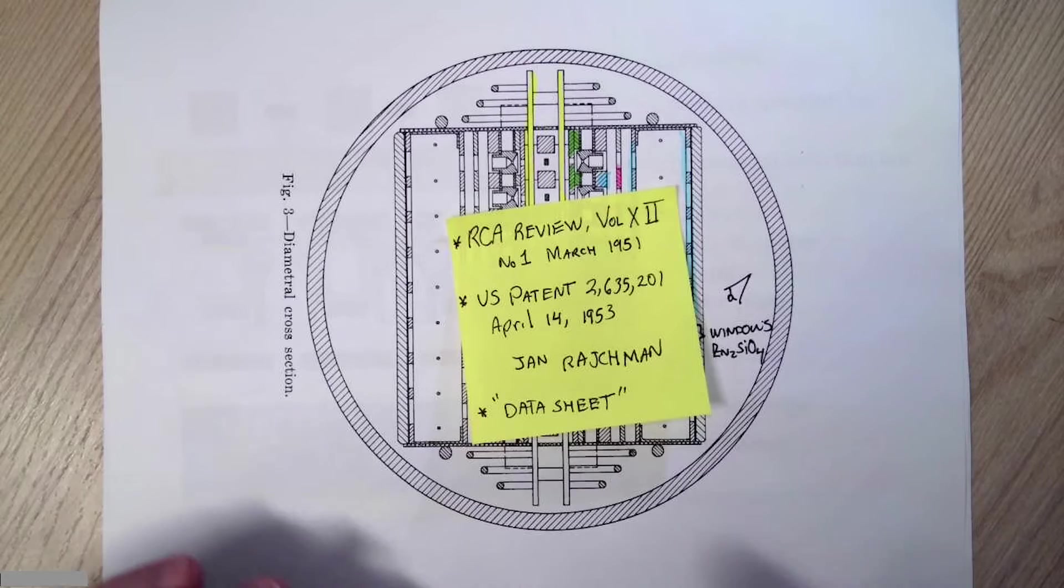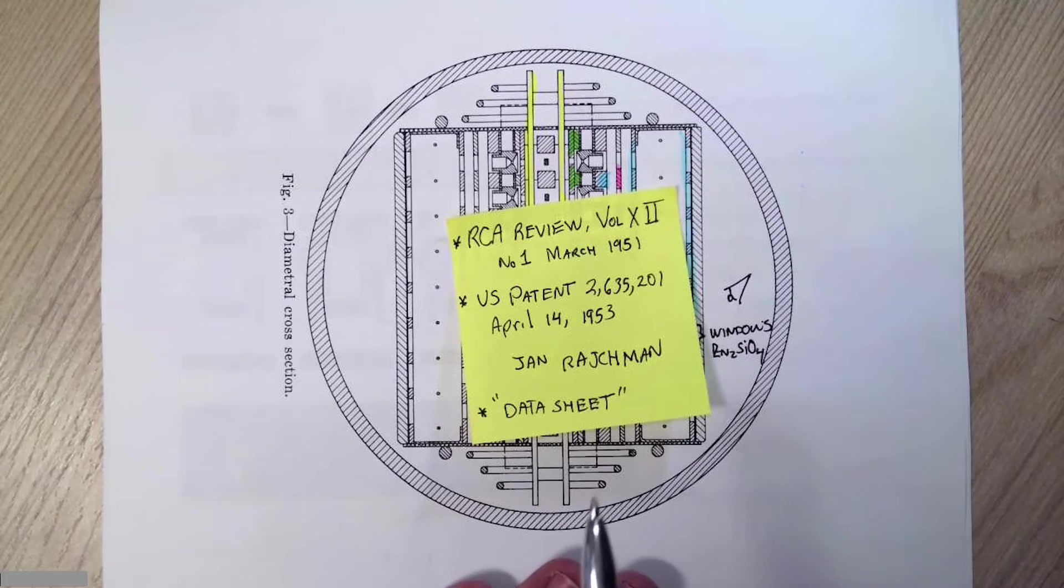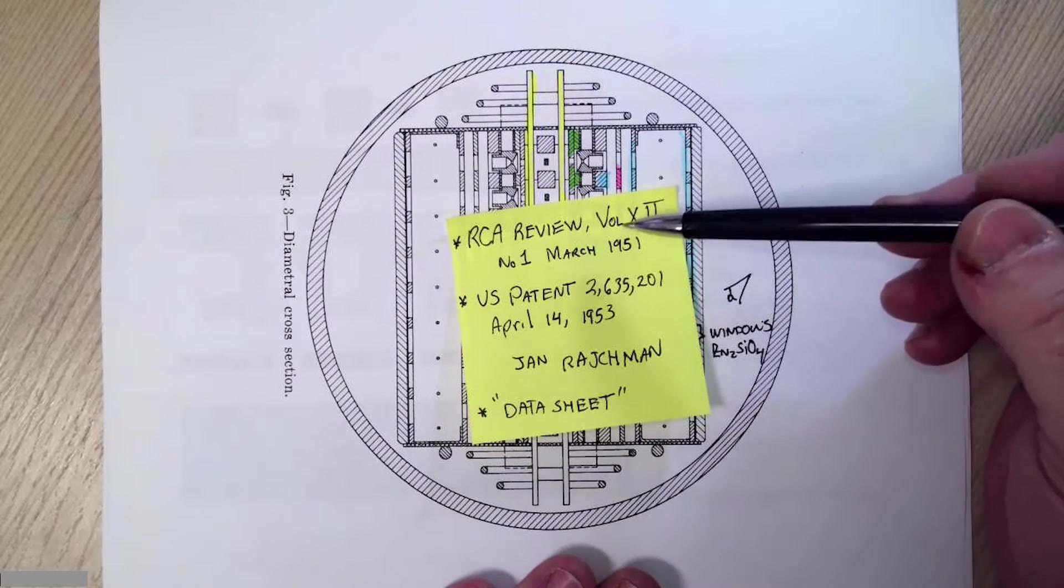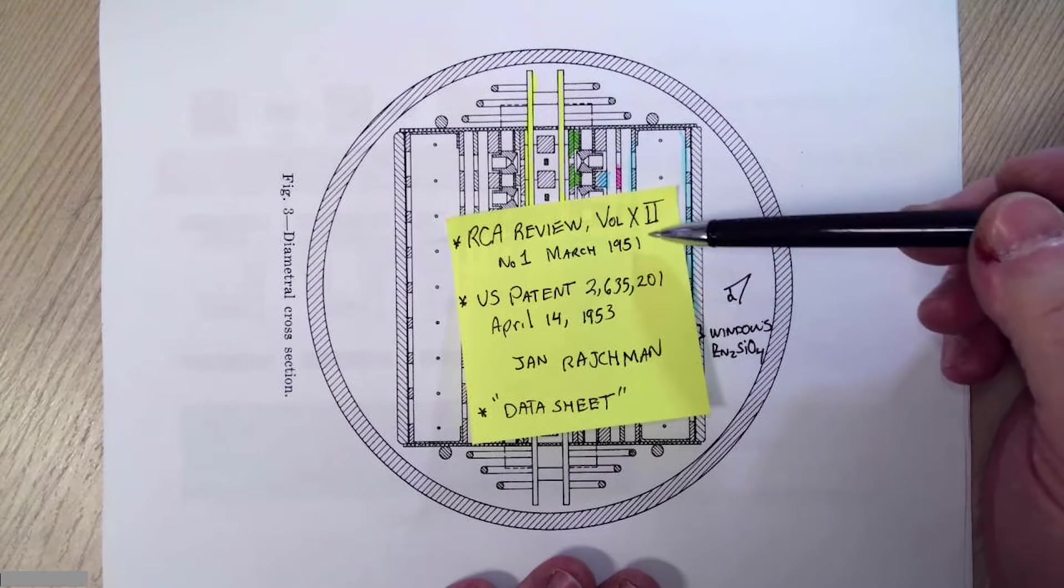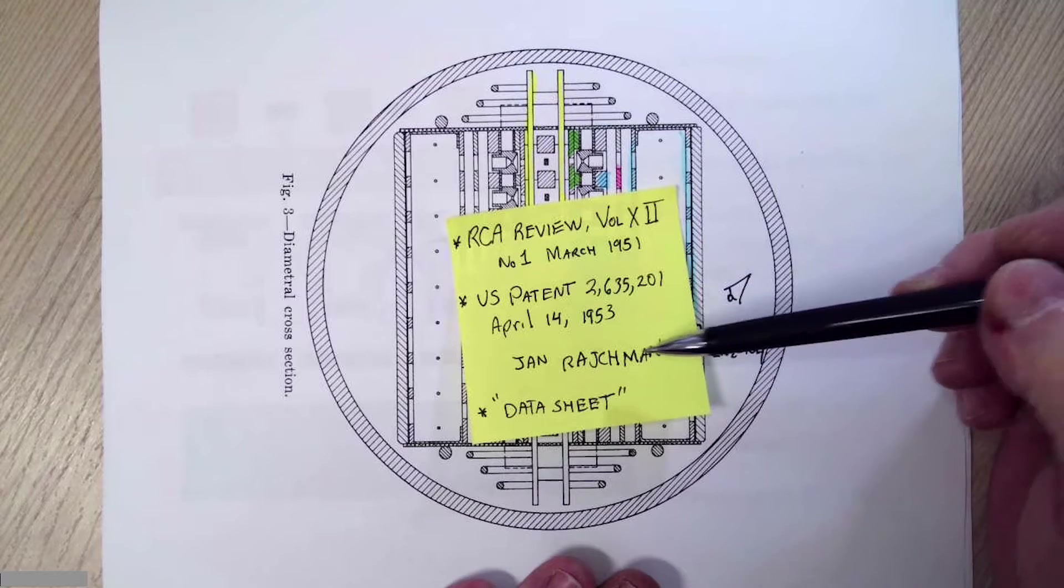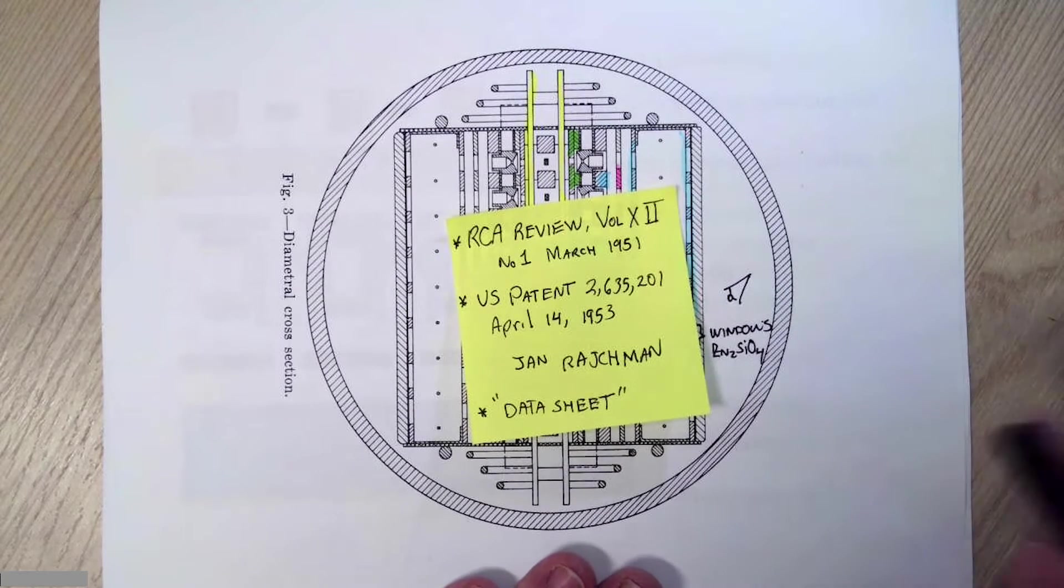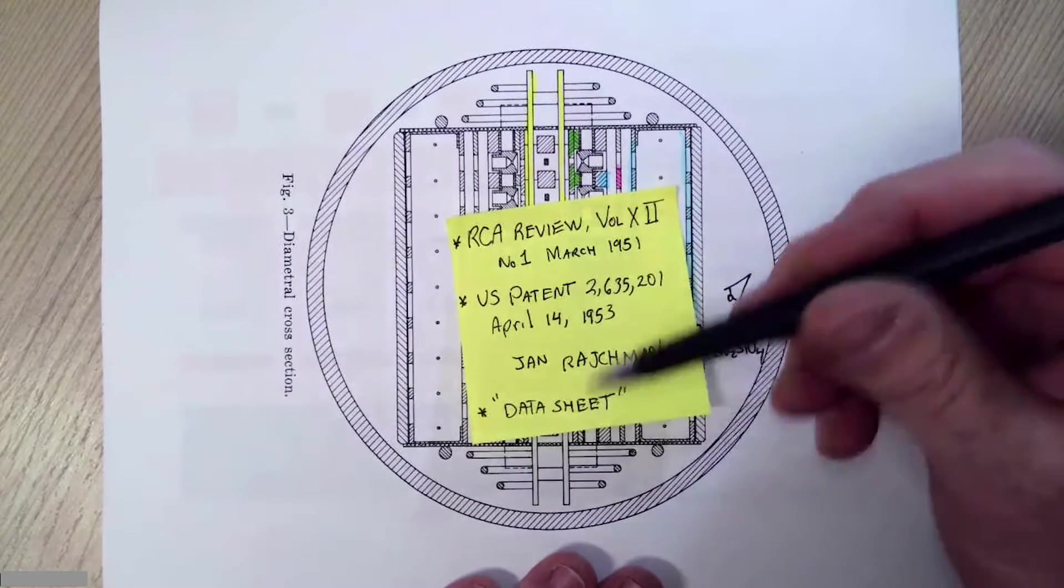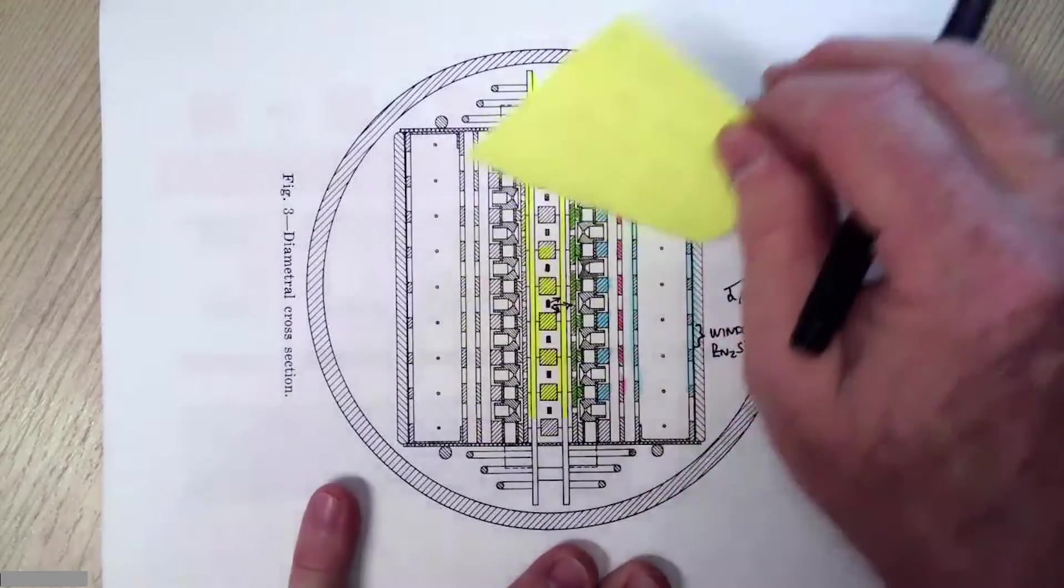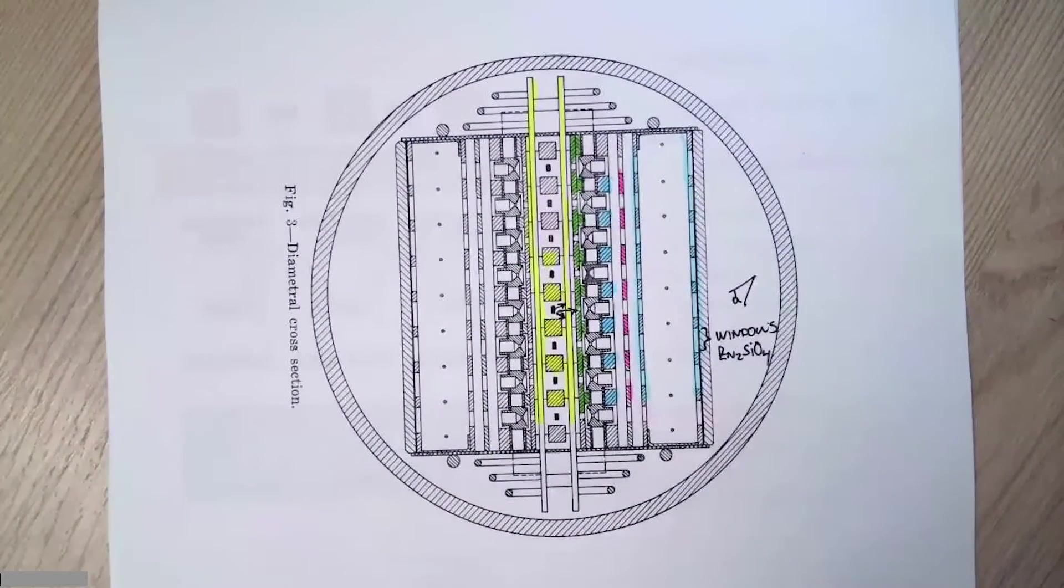So what we're going to do is go through the internal structure of this tube in a bit more detail. The technical information I'm pulling from is this RCA tech report or review, this patent, both of which are authored by the inventor, Jan Rachman, I believe that's how you pronounce it. And of course, the data sheet. All of these discuss the internal structure, they all provide some suggestion for potentials, and I will show you which potentials I settled on.